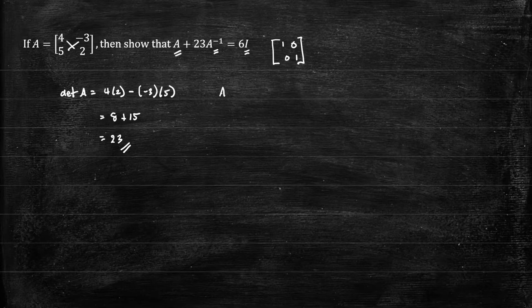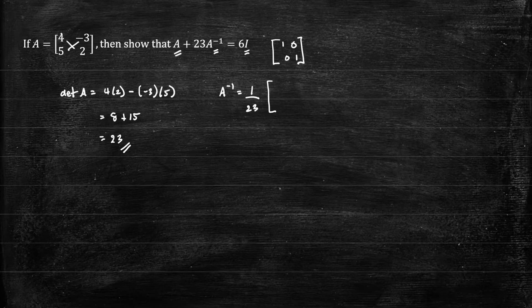And the inverse of matrix A is 1 over the determinant, which is 23 times. Now, what we do now, we've got these elements 4 and 2. We swap those elements. We'll get 2 and 4.